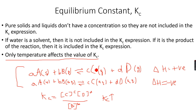Now, if the forward reaction is endothermic and I decrease temperature: the back reaction is exothermic, and a decrease in temperature favours the exothermic side. So more of A and B will form, making the denominator of the Kc expression greater, and therefore Kc will be smaller.